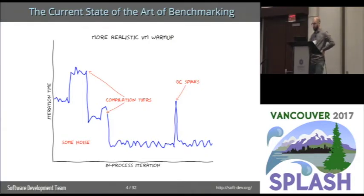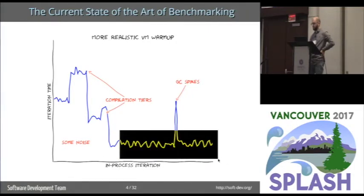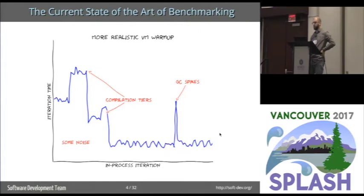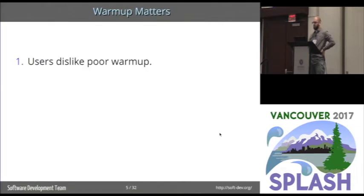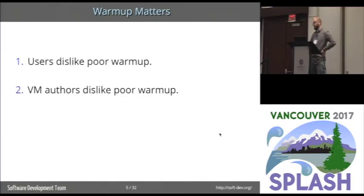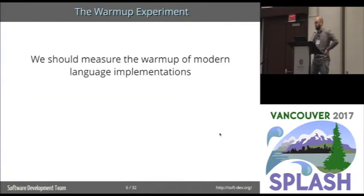When people benchmark, typically what they are interested in measuring is the steady state of peak performance. This talk is not about that. This talk is about the warm-up phase. Why should we be interested in the warm-up phase? Well, firstly, users really don't like bad warm-up, even if they don't know it — to them, bad warm-up is a program behaving slowly. Secondly, VM developers dislike poor warm-up because it gets in the way of their bragging rights. So warm-up is actually very important, and we should be measuring it. For that reason, we devised an experiment to measure exactly that — we want to know how long the warm-up phase is for modern language implementations containing just-in-time compilers.